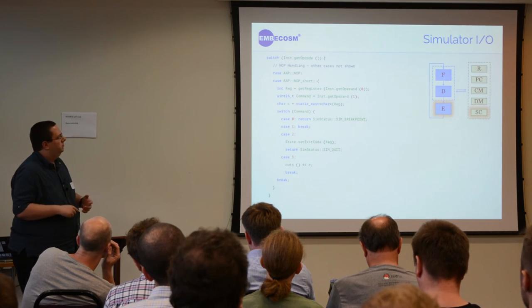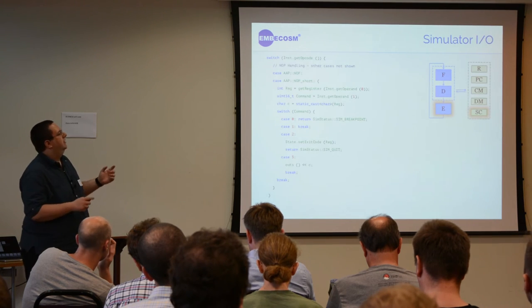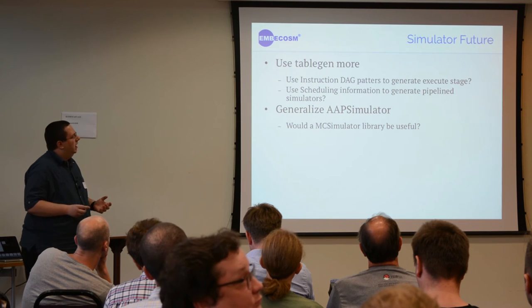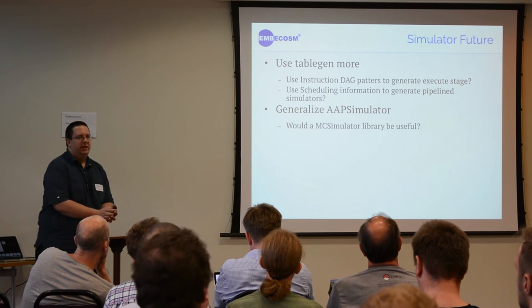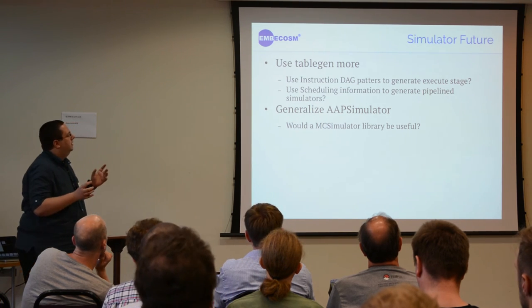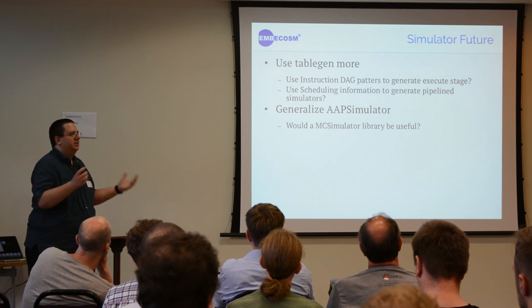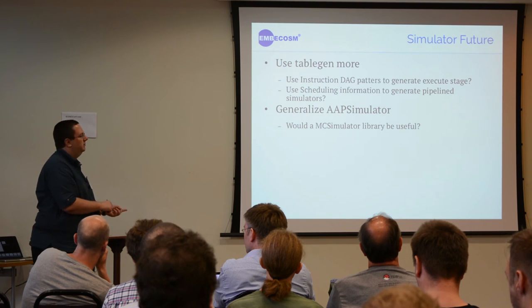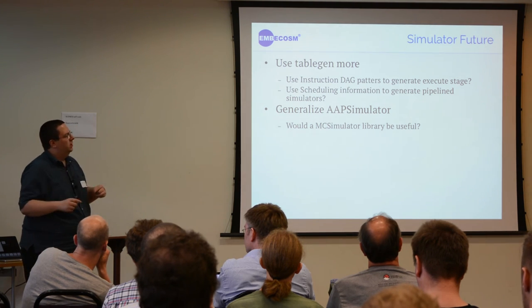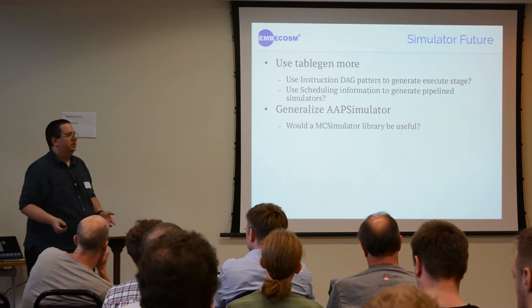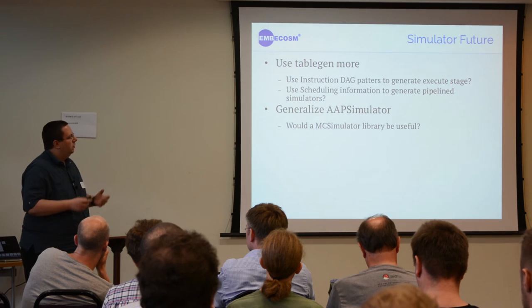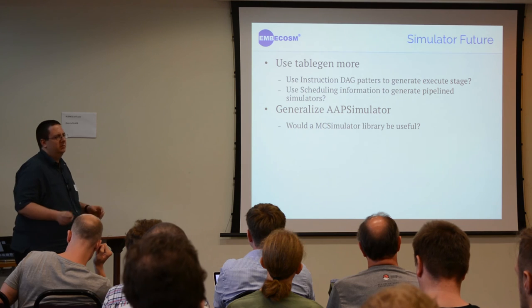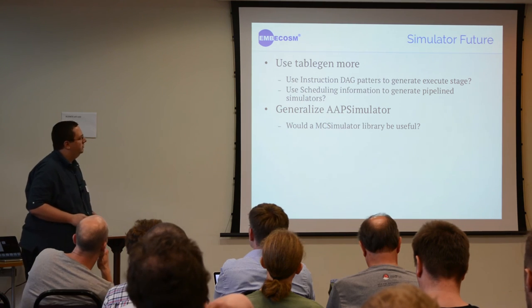Complete all of that, and I have a simulator. I want to take this further — TableGen has much more information. We have all this selection DAG information. Can I use that, run it backwards, and build the execution patterns for my simulator? Or can I use scheduling information to create a pipeline simulator? I'm also interested in whether anyone thinks this is generally useful for LLVM, because otherwise we just have this sort of weird library in our target.